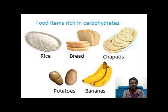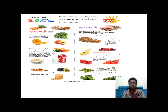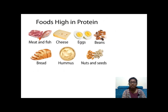Food items rich in carbohydrates include banana, chapati, bread, rice, and potatoes. Foods high in fat include butter and chocolates. Vitamins are of different types: Vitamin A, Vitamin B, Vitamin C, Vitamin D, Vitamin E, and Vitamin K.